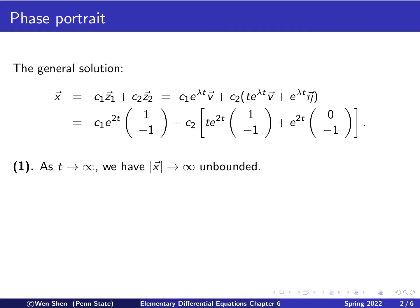Before we sketch the phase portrait, it's useful to look at the solution and understand some qualitative behaviors. First, let's see what happens as time grows to infinity. Because of the exponential term with a positive rate in front of t, this blows up to infinity, so the length of the x vector grows unboundedly. And as t goes to negative infinity, the solution goes to 0. So all solutions come from the origin and go out unboundedly.